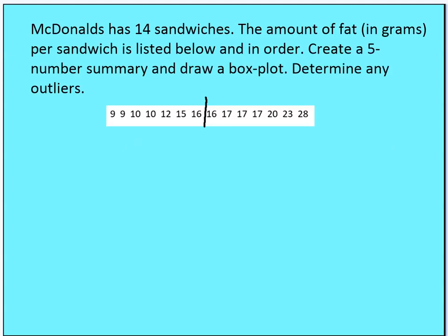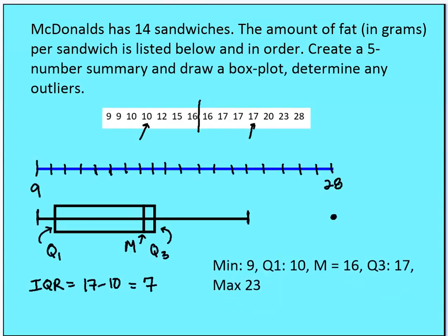This brings us to classwork 1.3.2. Here is a set of data measuring 14 McDonald's sandwiches and how many grams of fat they contain, listed in order. I want you to create a five-number summary, draw a box plot, and determine if there are any outliers using IQR times one and a half, plus the third quartile and minus the first quartile. I'm showing you the answers — please pause here.